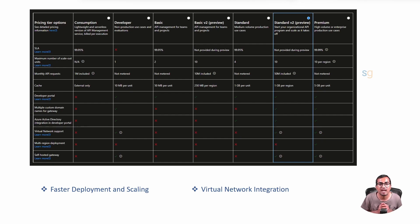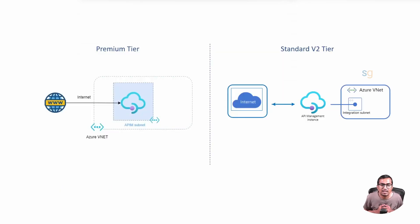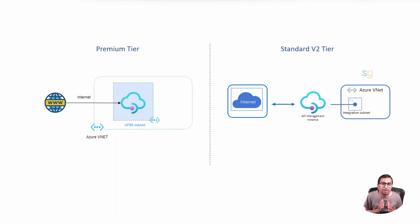The VNet integration in Standard V2 is different from the VNet integration in the Premium tier. In the Premium tier, the APIM itself is deployed inside the VNet — also often referred to as VNet injection — and it supports fully private integration with the virtual network. Whereas in Standard V2, the virtual network is integrated for outbound requests only, and the API management itself is not deployed in the virtual network.